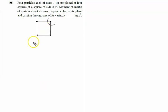Four particles each of mass 1 kg are placed at the four corners of a square of side 2 meters. This is a square, and it is given to us the side of the square is 2 meters.